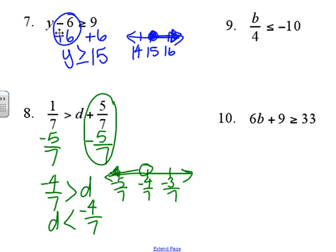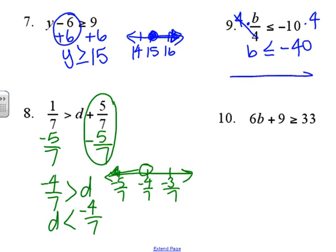Number nine: we're going to use the multiplication property of inequality and multiply by four on each side. So we get b is less than or equal to negative 40. That would be a closed circle with the ray going to the left.